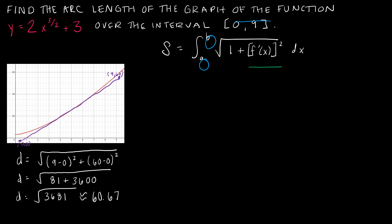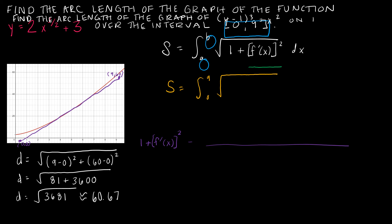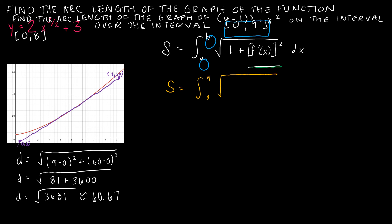This is pretty easy: A and B are given in the question, so I have zero to nine. Then I have one plus — and now I have to do some work. Different students and teachers have different approaches; sometimes you'll see a separate section of work where the student finds F prime of X squared and plugs that final result in. That's fine. I tend to just find F prime of X, square it, and plug it back in directly.